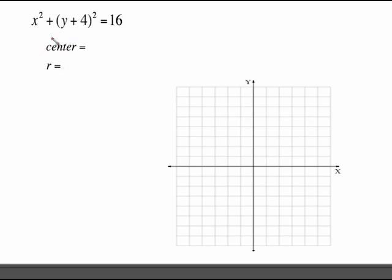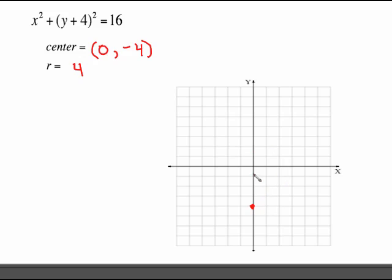For x squared plus (y plus 4) squared equals 16: there are no parentheses around the x, so the center is 0 comma something. Also, this says y plus 4, so change that sign and we get negative 4. Take the square root of 16 and we have 4. So the center is (0, negative 4) and the radius is 4. Count 4 in every direction — 4 up, 4 left, 4 right, 4 down — and then sketch your circle.